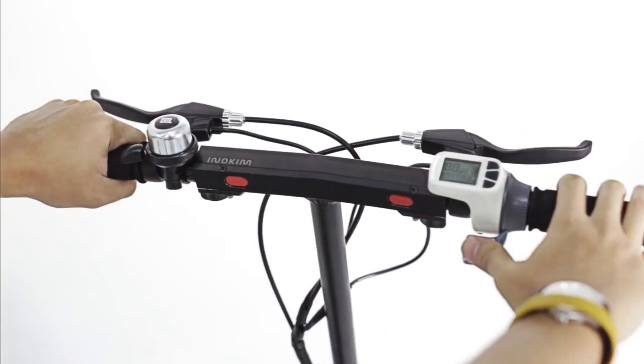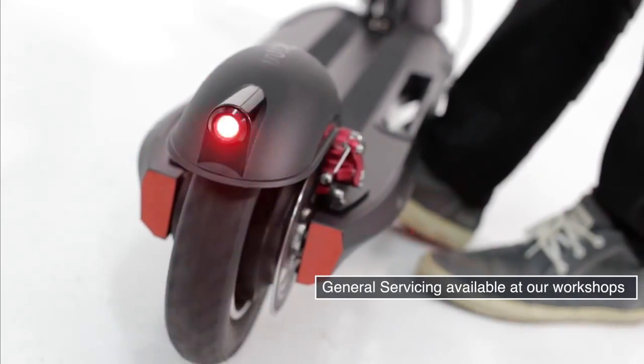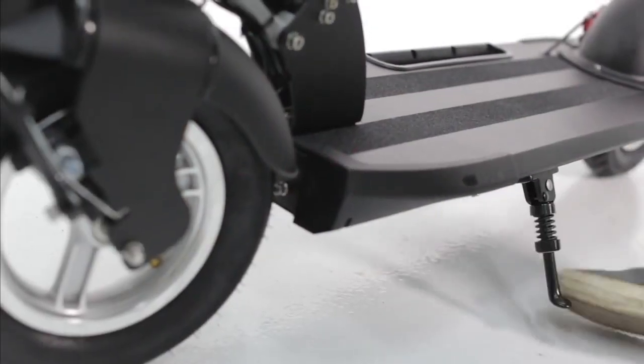On the handlebar we have a bell, the rear brake lever, front brake lever, and thumb throttle.